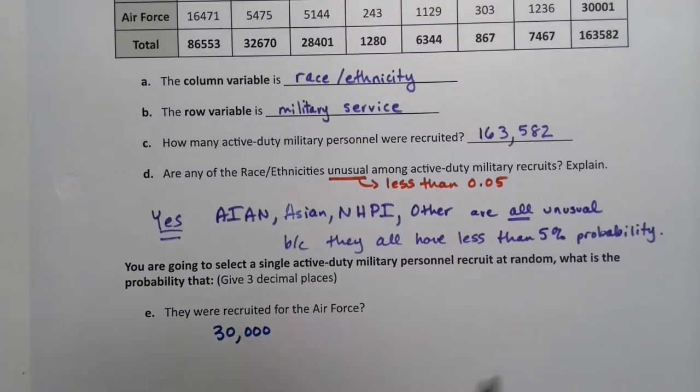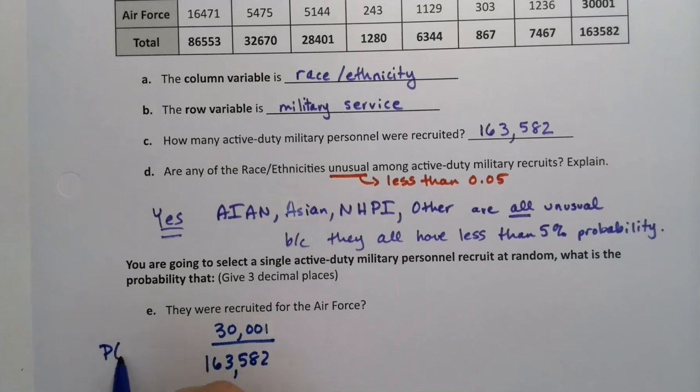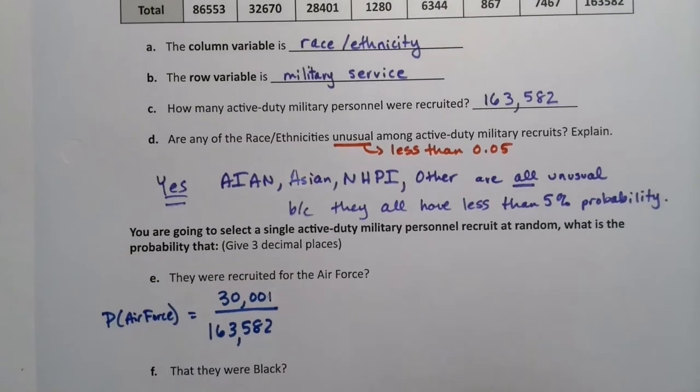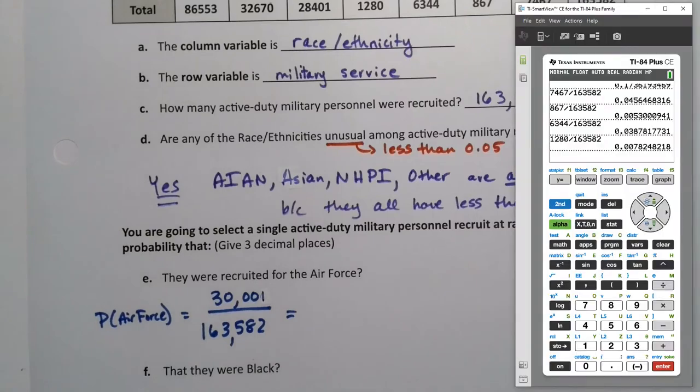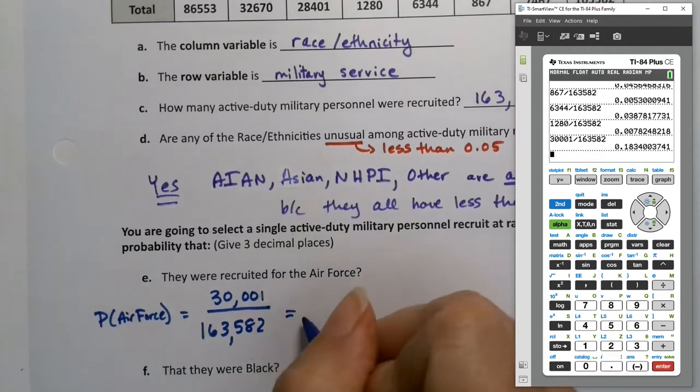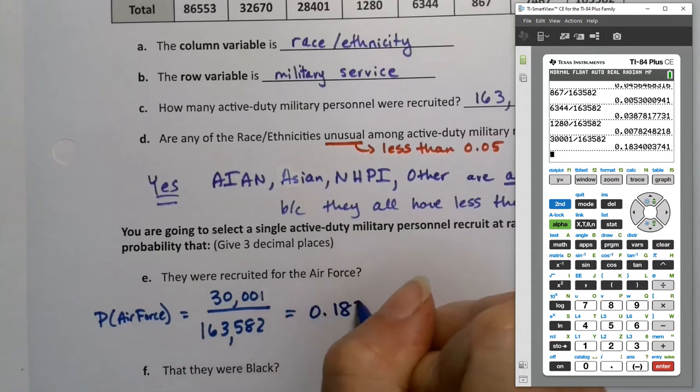So there were 30,001 divided by 163,582 because that's the total. So this will be the probability of Air Force. Right. So it's the total for the Air Force divided by the total, total. Right. So that would be, well, I have no idea, but I can grab a calculator. And again, if you'd like, you can use decimals. Either one will work. We divide it by 163,582.